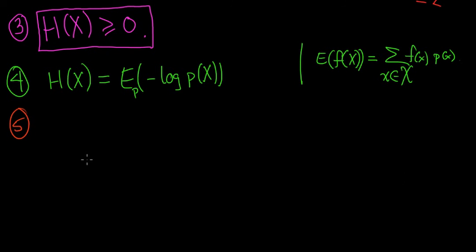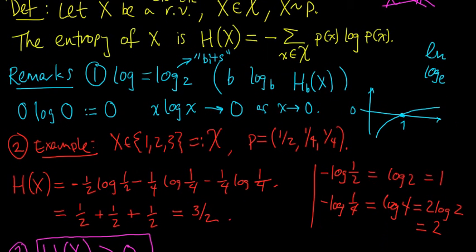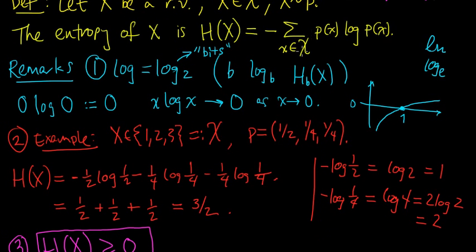This formula is sometimes very useful for working with entropies. Expectations are always nice. Five. The next thing to note is that the entropy of x, it depends only on the distribution p, where x is distributed according to p. And you can see this just from the formula. The only place that the values that x actually takes, the only place that they come into play is when they're evaluated at this function p.